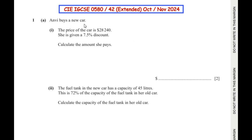Anvi buys a new car. The price of the car is $28,240. She is given a 7.5% discount. We have to find out how much amount she is going to pay after the discount.